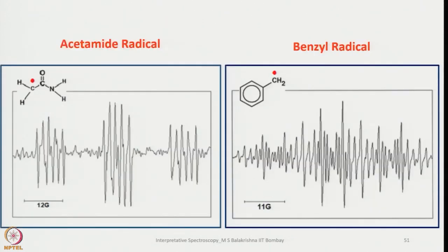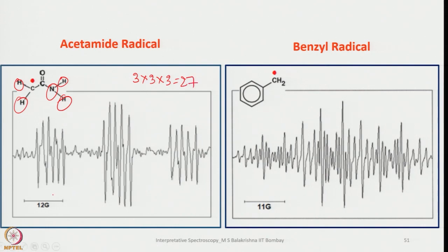Let us look at the acetamide radical. We have to consider coupling with nitrogen and also the two hydrogens. First it couples with nitrogen to give 3 lines, and then each line is split by the 2 equivalent hydrogens — giving triplet of triplets. Each coupling gives 3 lines, so 3×3×3 = 27 lines total.